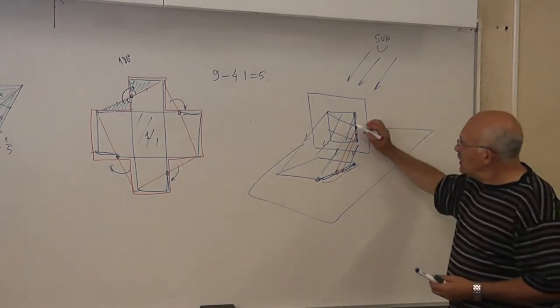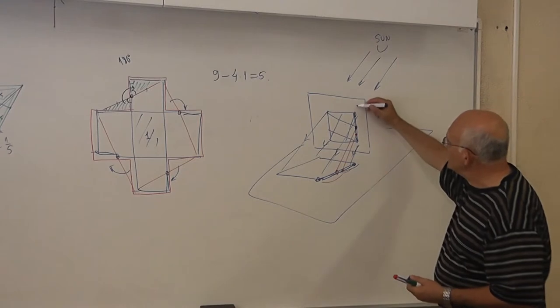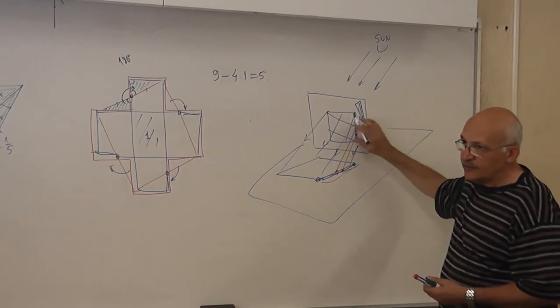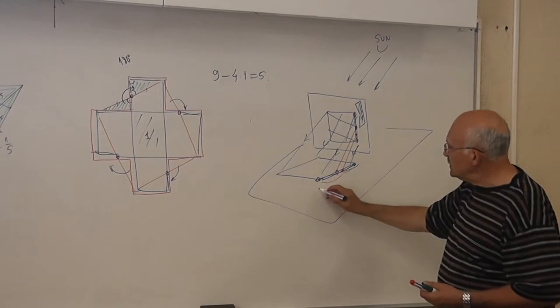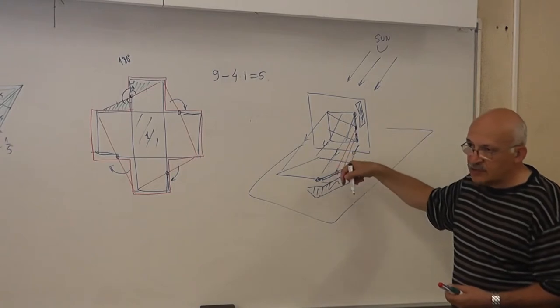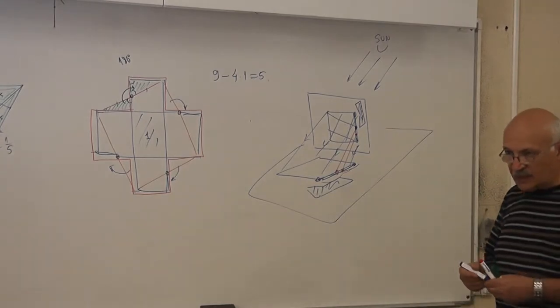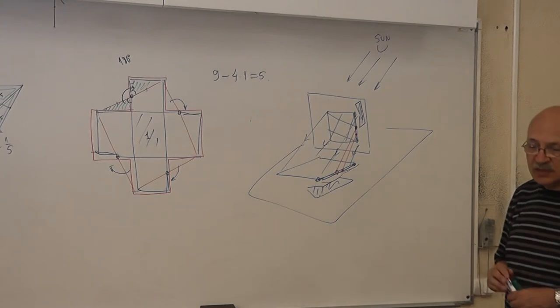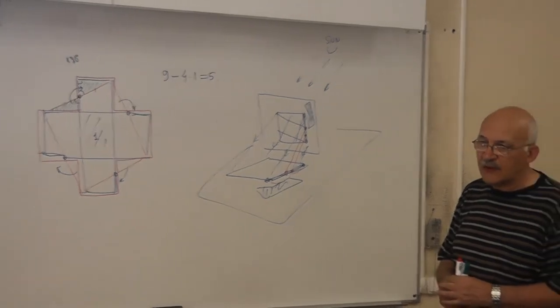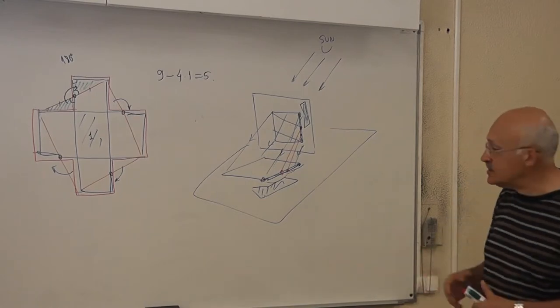Also, the ratio of areas is preserved. The ratio of areas of the shadows will be the same as the ratio of the given figures. Why is the ratio of areas preserved?